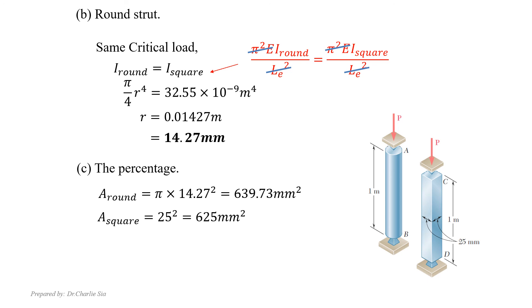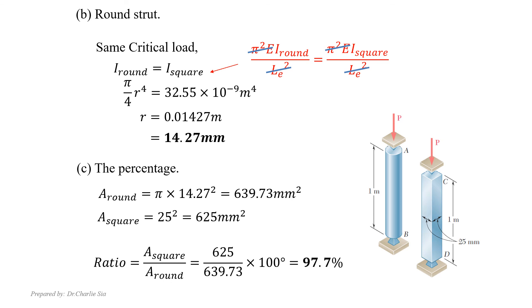For part C, we have the area of the round cross-section and the area of the square cross-section. Applying the ratio formula — A_square divided by A_round multiplied by 100 — gives a result of 97.7%.